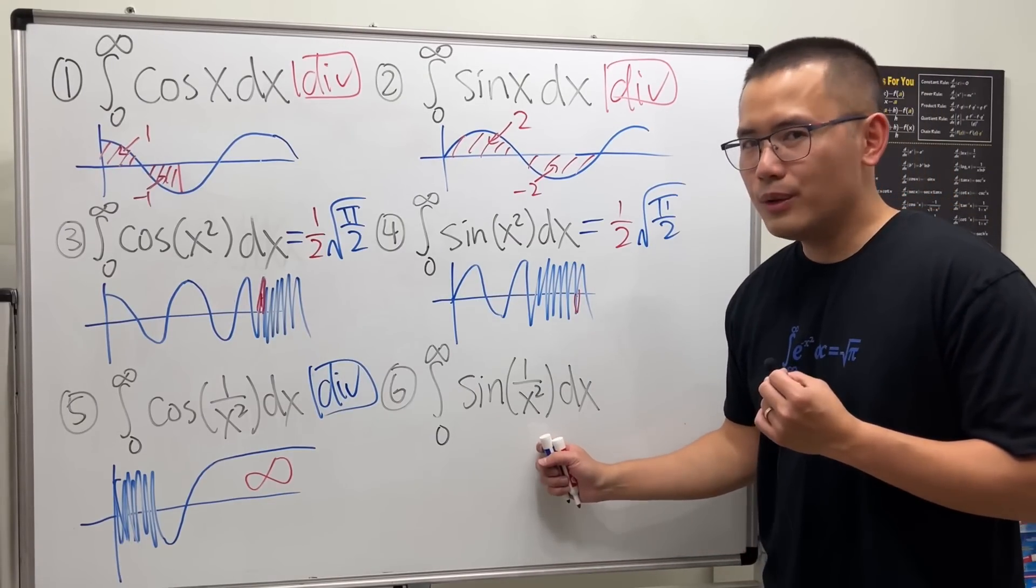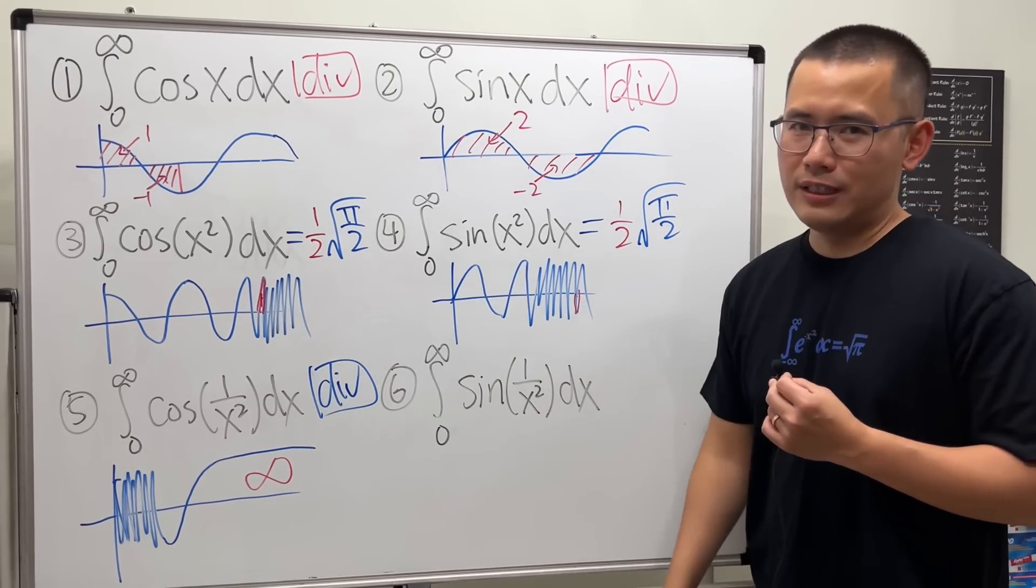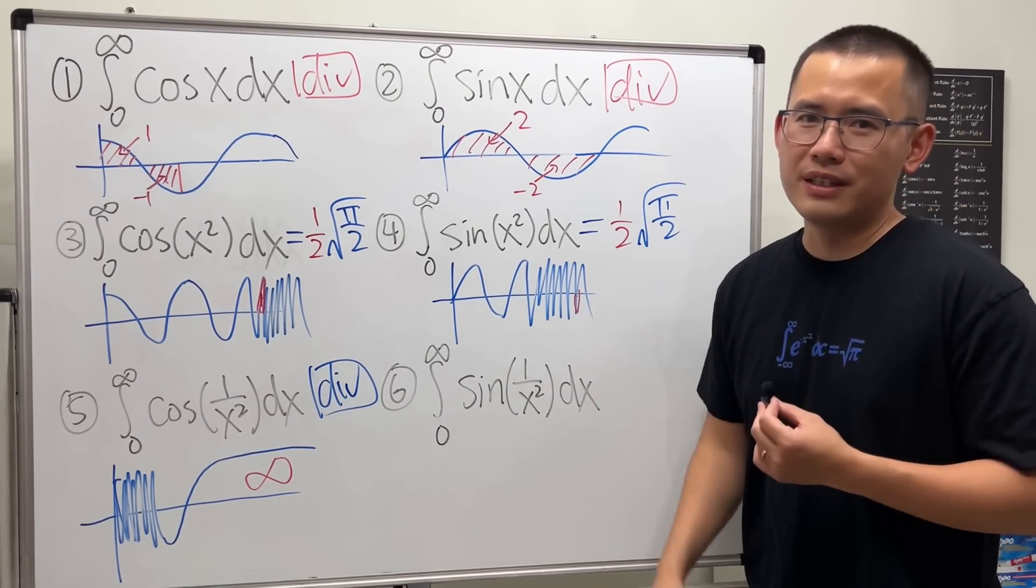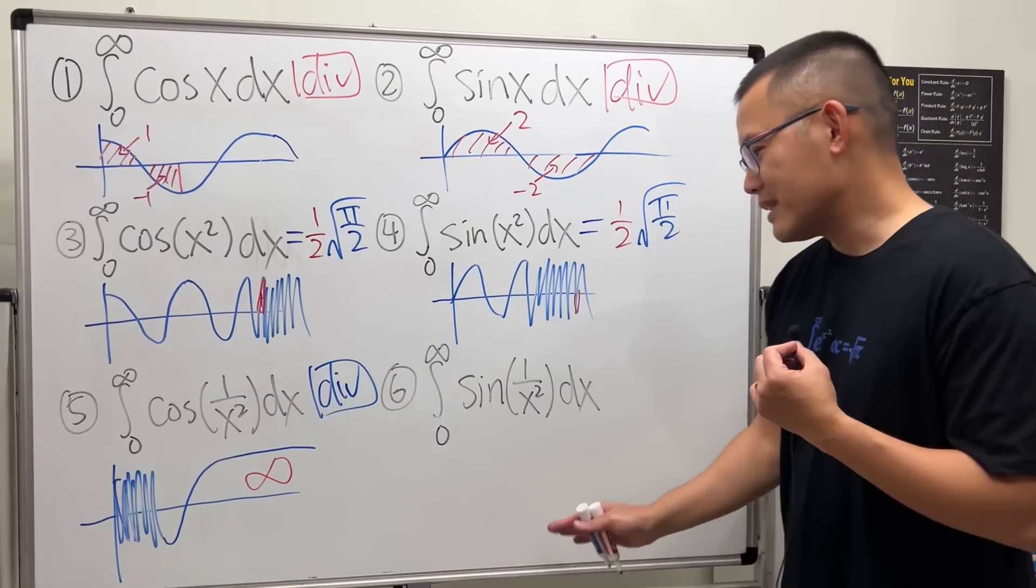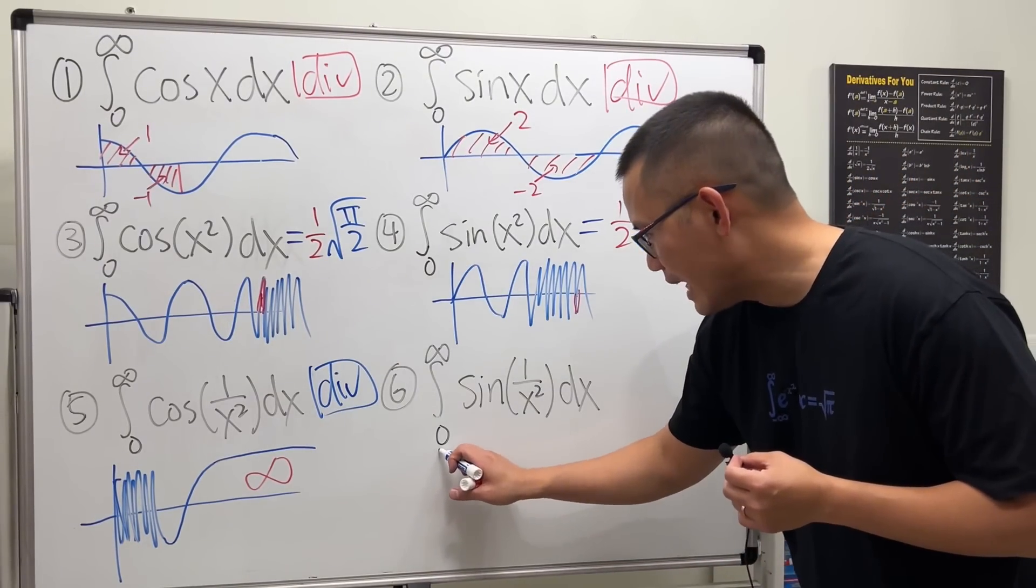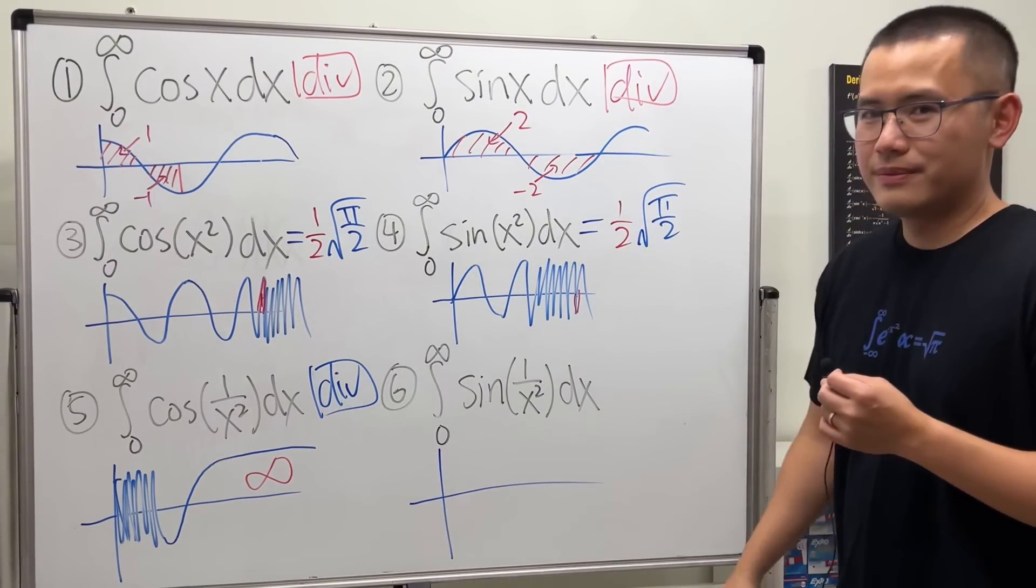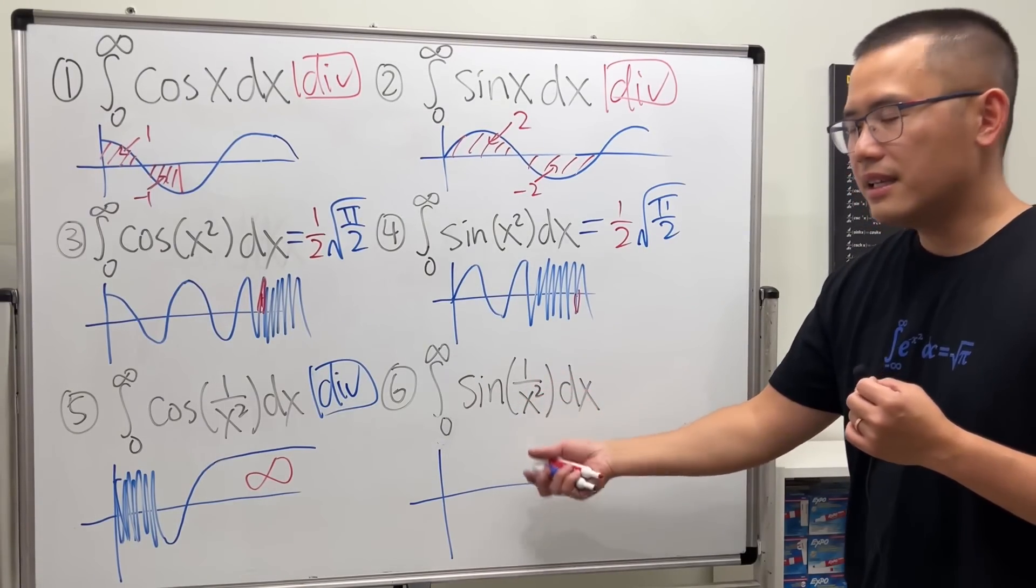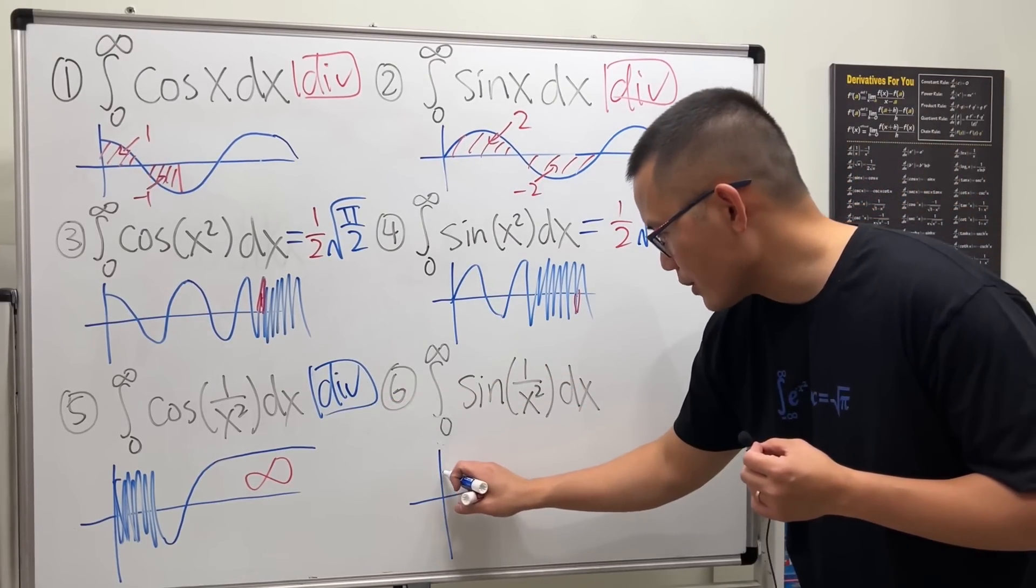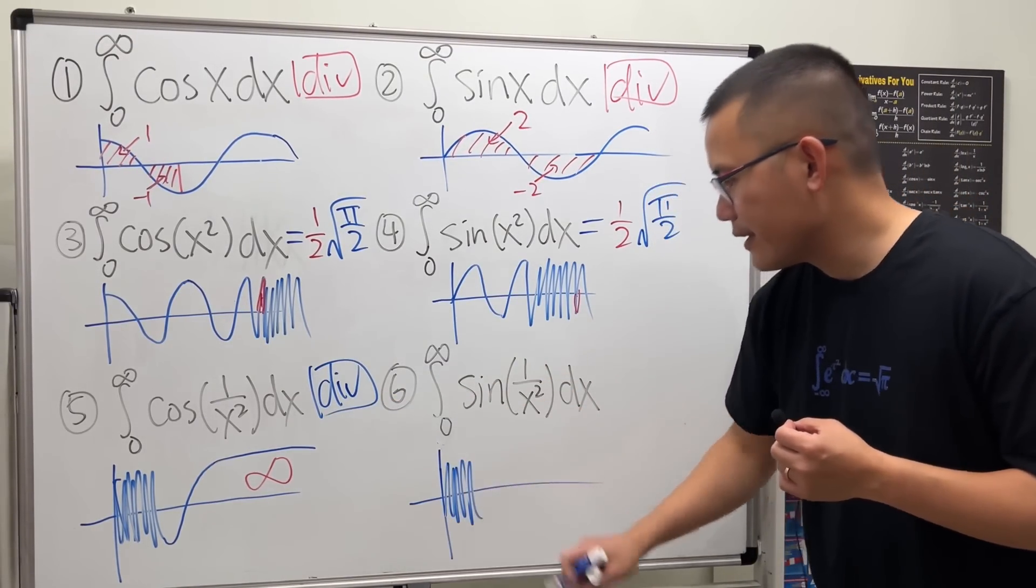Now, does this also diverge? Of course not. Because otherwise, how can I make the next video? This thing actually converges very nicely. But now, let's have a look. Why does it have a chance to converge? Again, if x is approaching 0, we will get infinity inside. And it will just get something like that. So it's going to be like this. And then, what's going to happen is it's going to jump up.